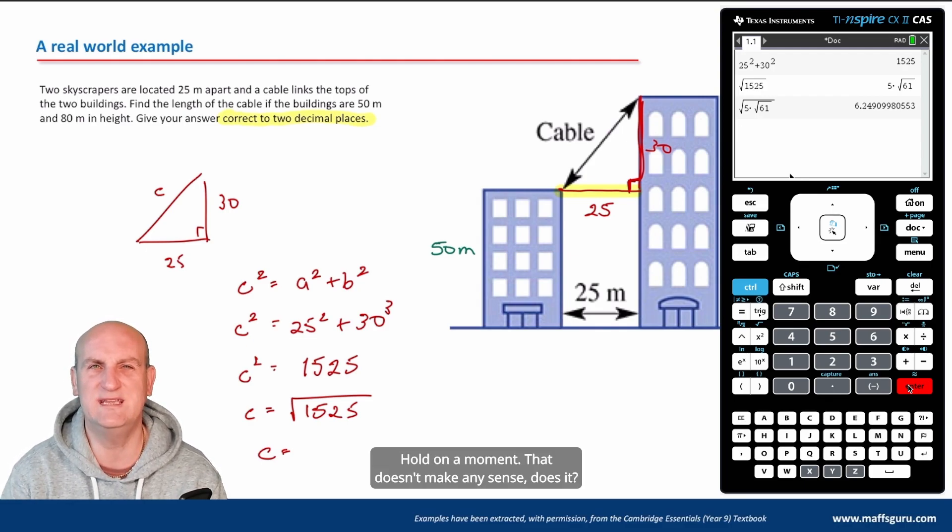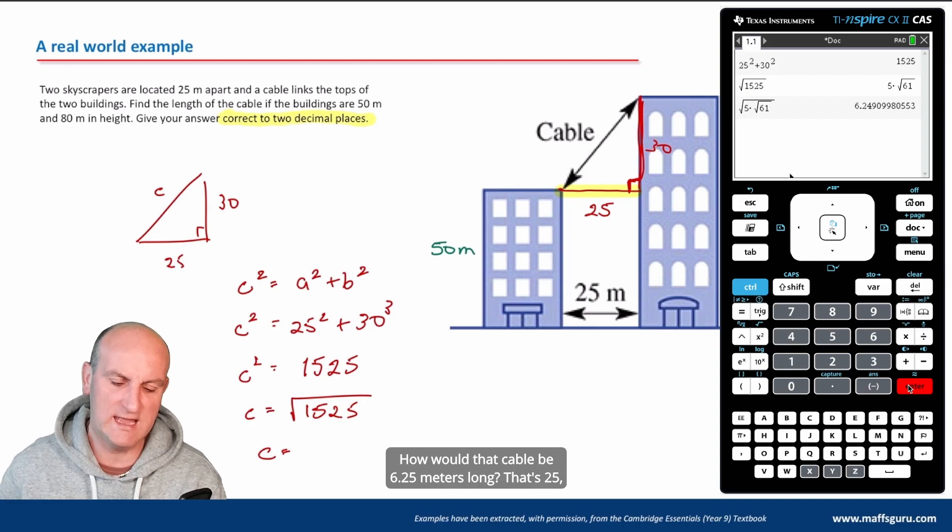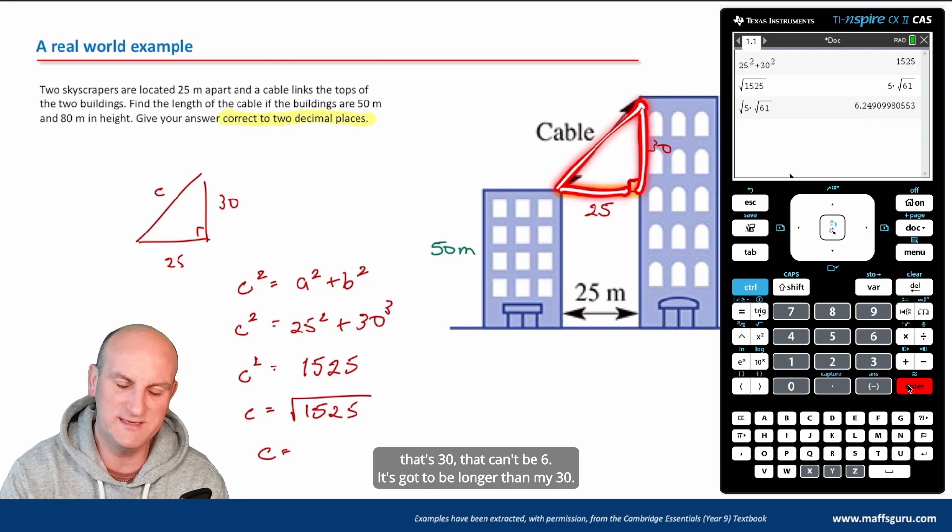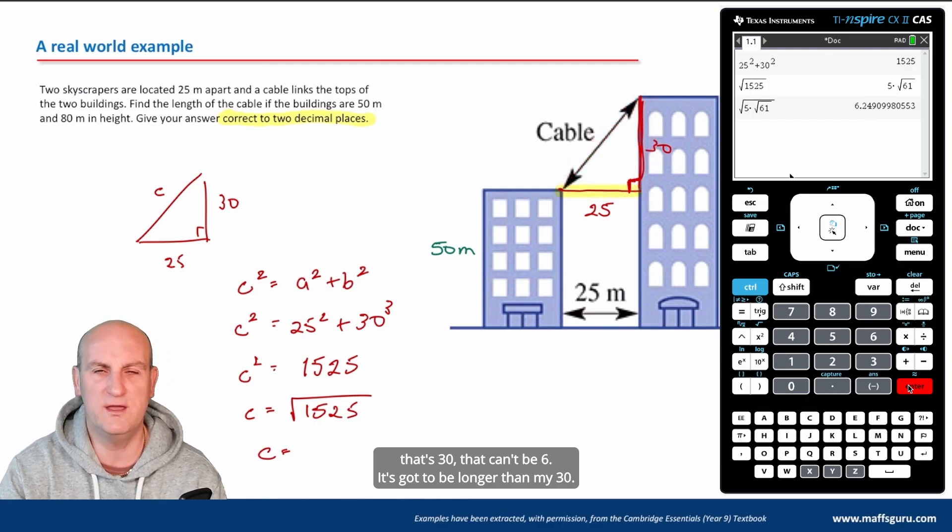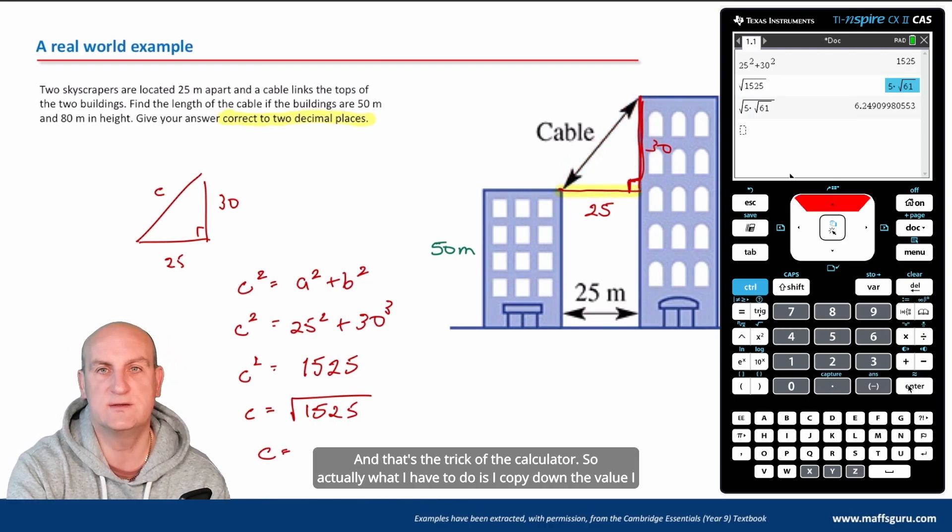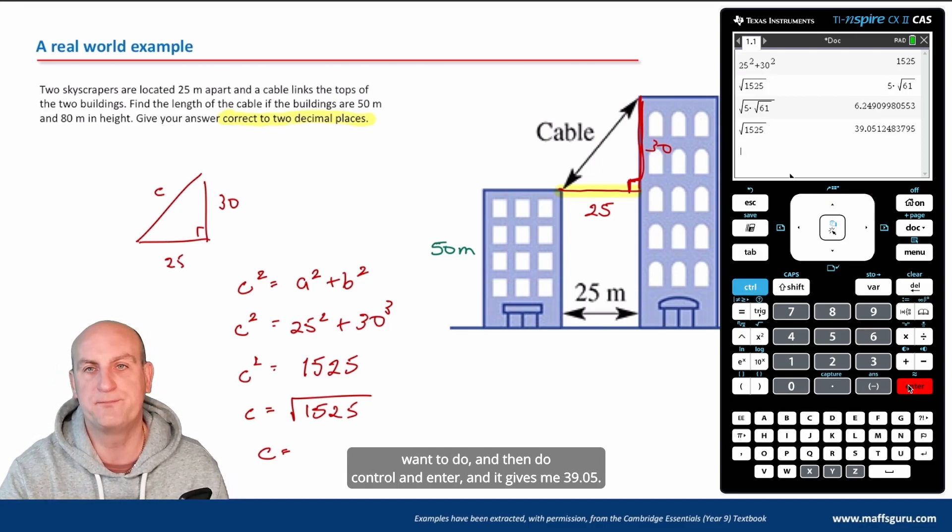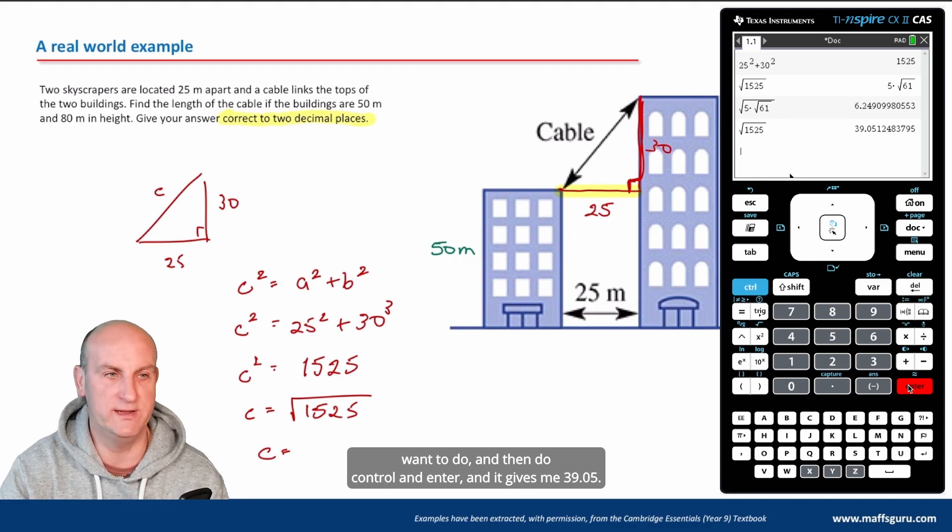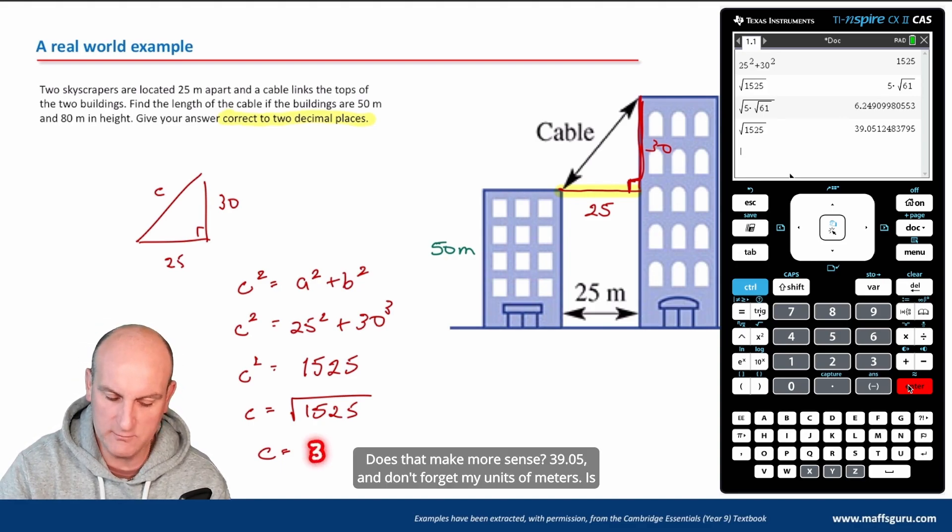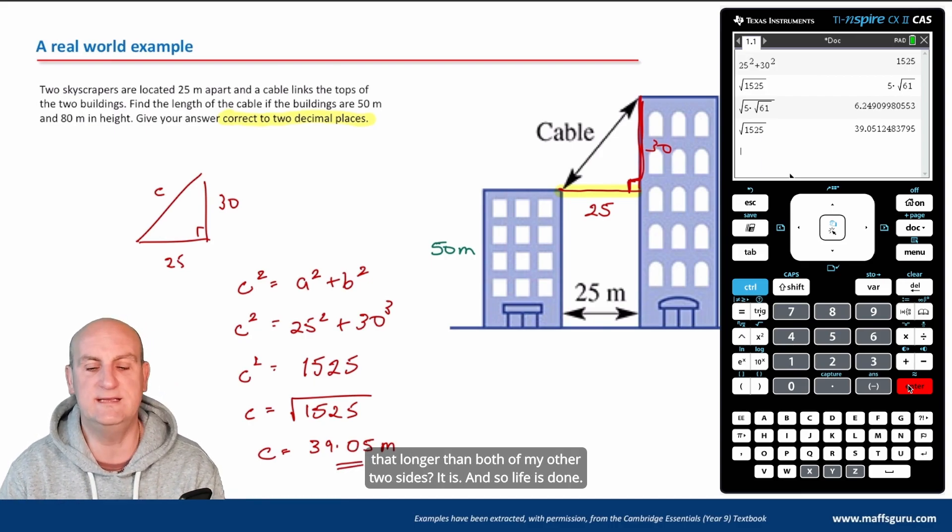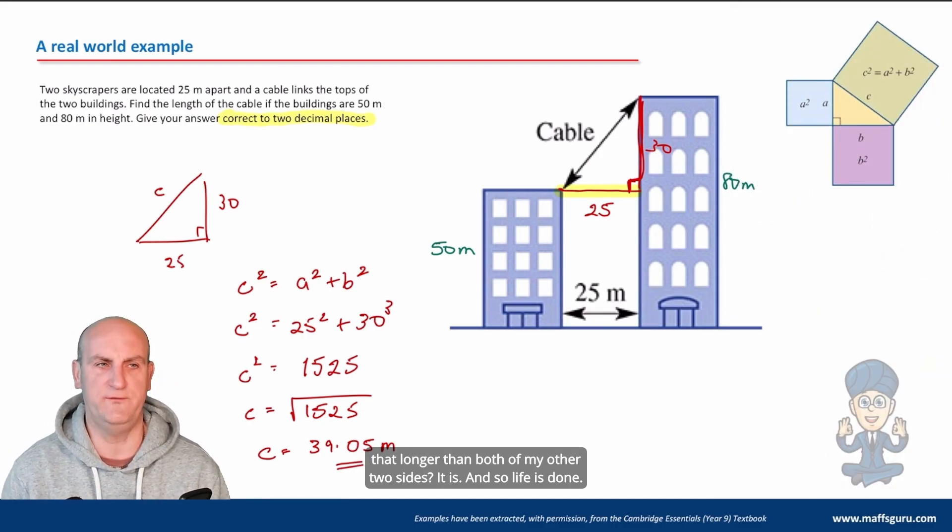Hold on a moment. That doesn't make any sense, does it? How would that cable be 6.25 meters long? That's 25, that's 30. That can't be 6, it's got to be longer than my 30. And that's the trick of the calculator. So actually what I have to do is copy down the value I want to do and then do control and enter, and it gives me 39.05. Does that make more sense? 39.05 meters. Is that longer than both of my other two sides? It is. And so life is done.